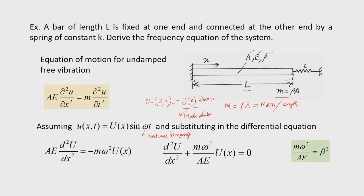For a continuous system, we have an infinite number of natural frequencies. In the solution, we will get infinite number of roots, giving different eigenvalues. Corresponding to each eigenvalue, we get the eigen shape.